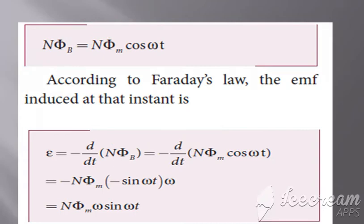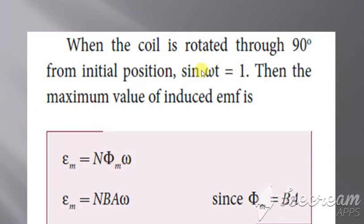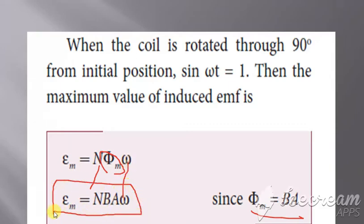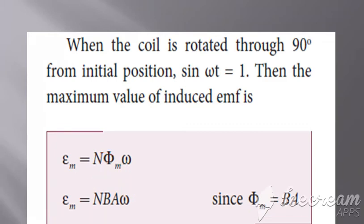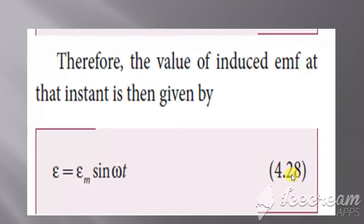The differentiation of cos(omega t) is omega times sin(omega t). Considering sin(omega t) equal to 1, we get E_m equals N·phi_m·omega. Instead of phi_m, it can also be written as B times A. So E_m equals N·A·B·omega. This gives the maximum value of EMF when changing the orientation of the coil.